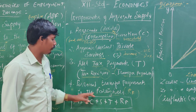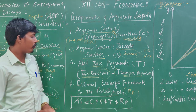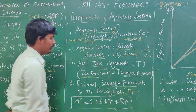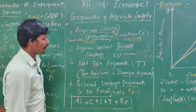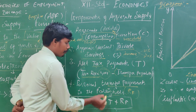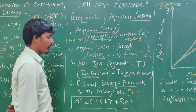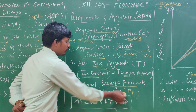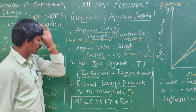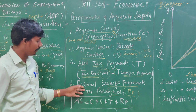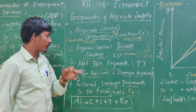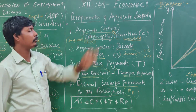The fourth component is personal transfer payments to foreigners — foreign transfer payments. Transfer payments received by foreigners. That is the component of the aggregate supply.